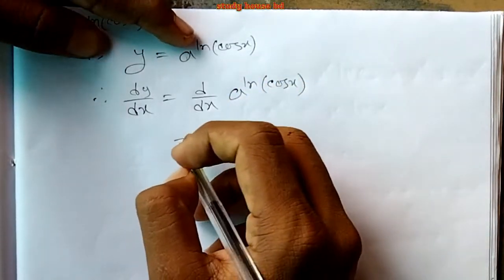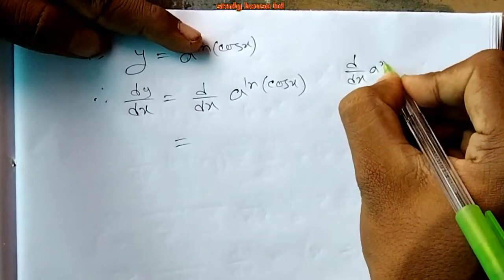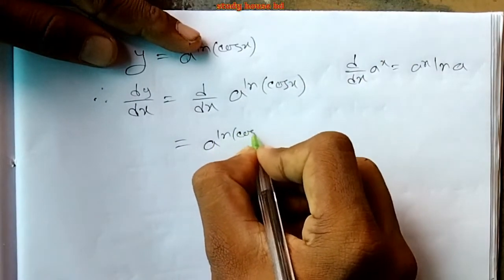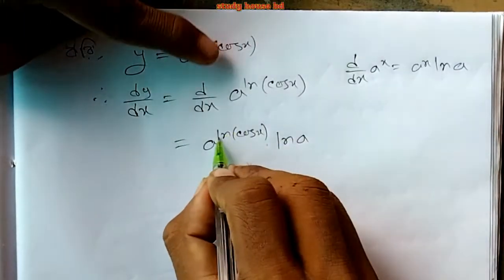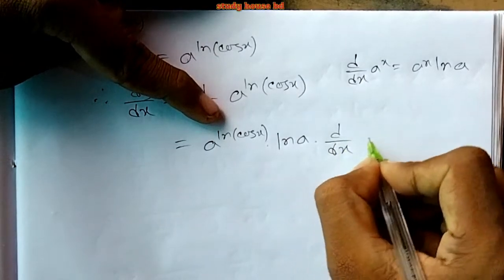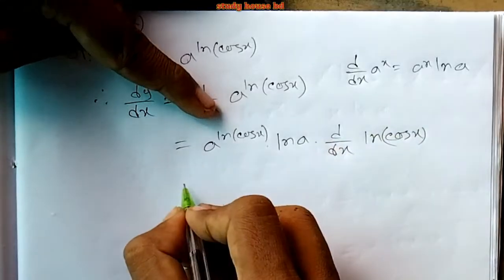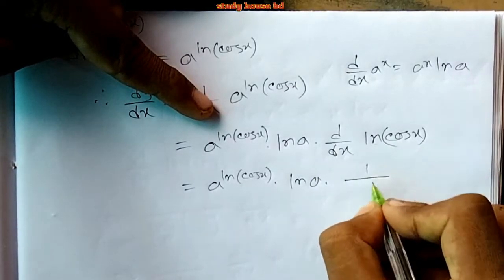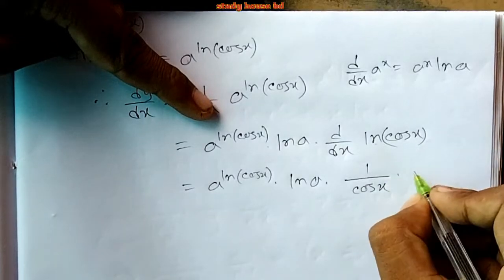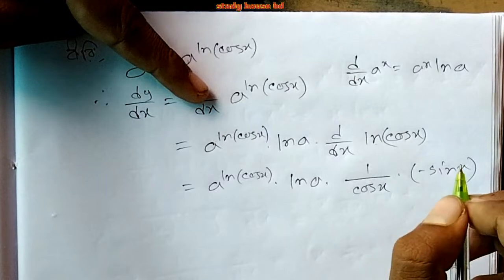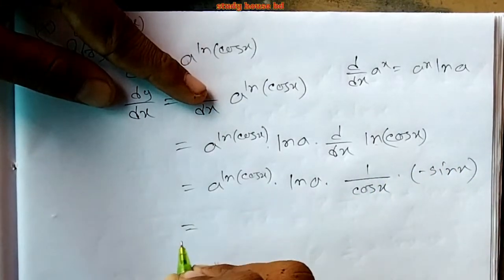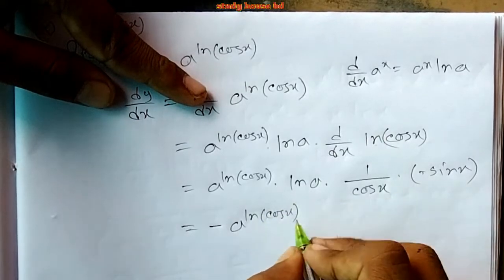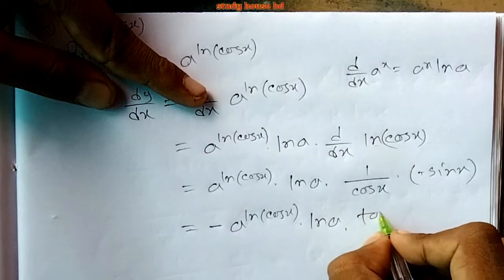We will have d/dx of a^x equals a^x times ln a. So we will have a^x into ln a. Then d/dx equals x, and we will have to find d/dx of ln cos x. If this equals x, we will have ln cos x. The answer involves ln a and the reclam sign — cosine answer.